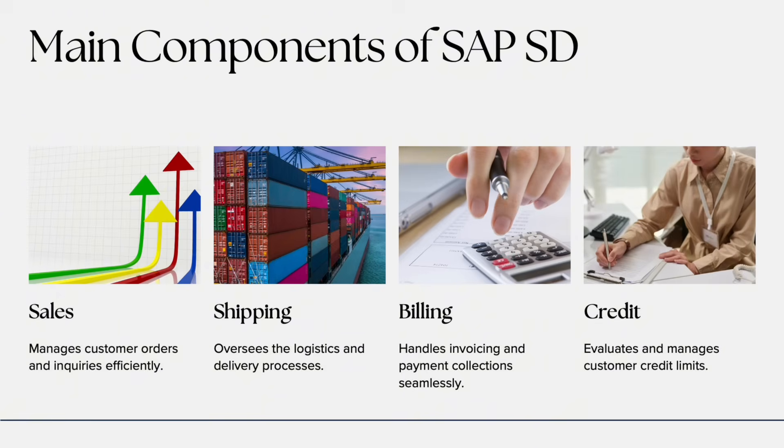For example, a customer requests a price, you send a quotation, they confirm, and you create a sales order. Component two is Shipping and Delivery. Once the order is confirmed, SD handles the delivery process — picking, packing, and goods issue — ensuring that the right product is sent to the right customer on time.